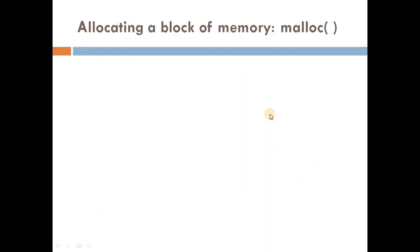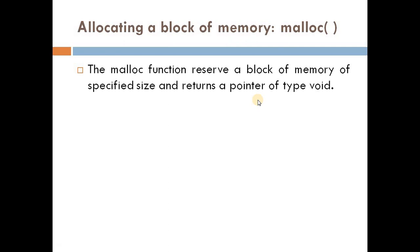Next we'll discuss the first dynamic memory allocation function: malloc. It is used for allocating a block of memory. The malloc function reserves a block of memory of a specified size and returns a pointer of type void, which means we can assign it to any type of pointer.